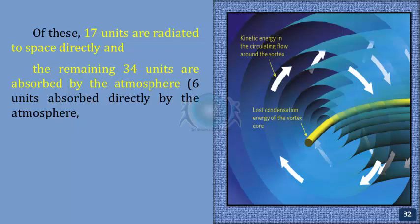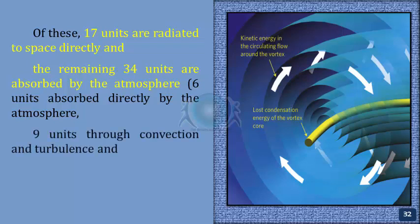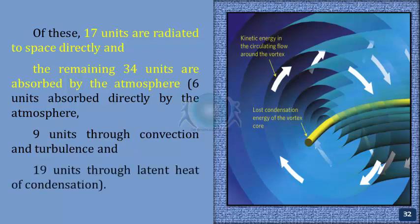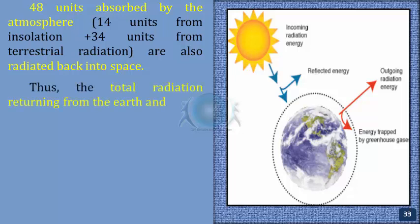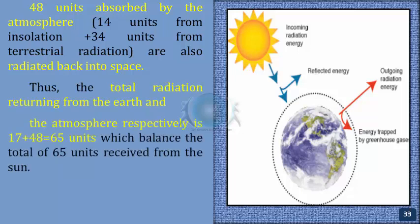Of the 34 units absorbed by the atmosphere: 6 units are absorbed directly, 9 units through convection and turbulence, and 19 units through the latent heat of condensation. The 48 units absorbed by the atmosphere — that is, 14 units from insolation plus 34 units from terrestrial radiation — are also radiated back into space. Thus, the total radiation returning from the Earth and the atmosphere is 17 plus 48 equals 65 units, which balances the total of 65 units received from the Sun.